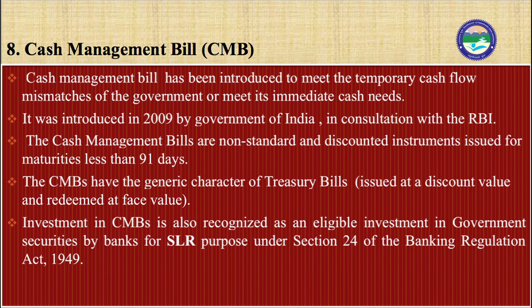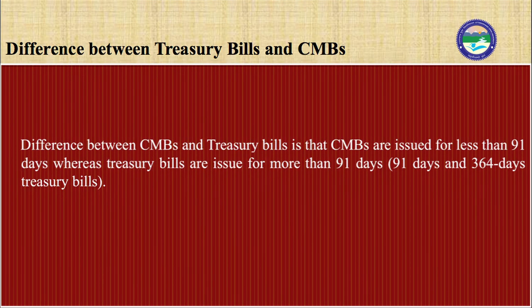The only difference between cash management bills and treasury bills is that cash management bills are issued for less than 91 days, whereas treasury bills are issued for 91 days and 364 days.